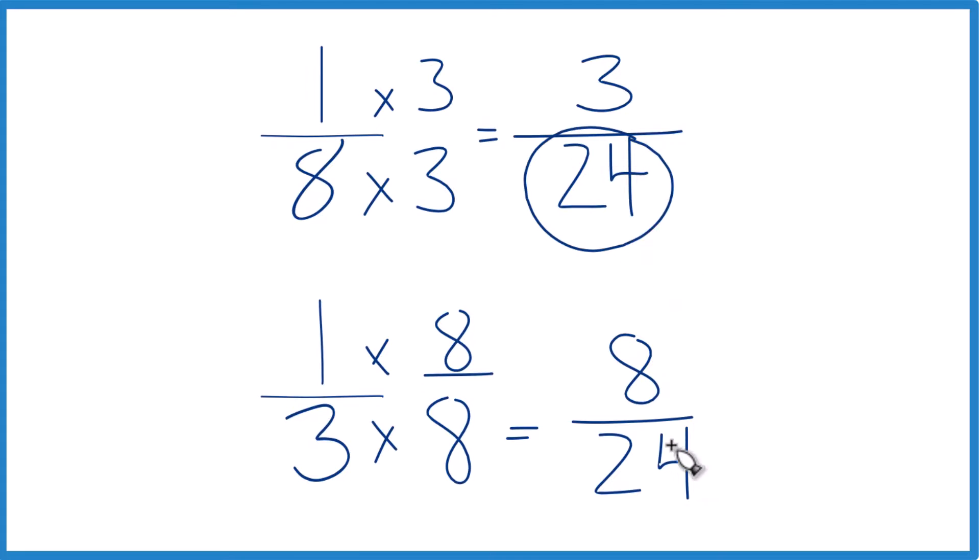Now we've got the same denominator. We just compare the numerators. And 8's larger than 3, so 8 24ths. That's larger than 3 24ths.